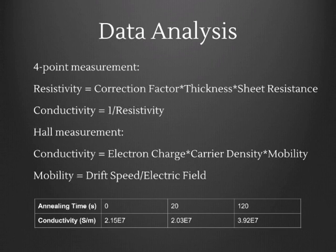The data obtained from a four-point measurement is the sheet resistance. To get the resistivity, it has to be normalized by the thickness of the conductive layer and the correction factor based on the geometry of the thin film. The conductivity then is simply reciprocal of the resistivity. The data obtained from a Hall measurement are density and drift speed of carrier. Mobility of a carrier is defined by the drift speed over the applied electric field. Conductivity is then calculated by multiplying carrier density with mobility and electron charge.